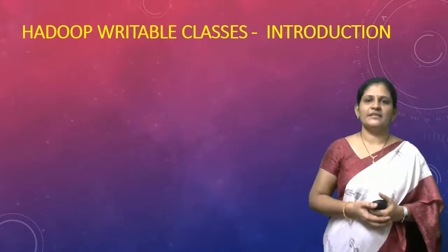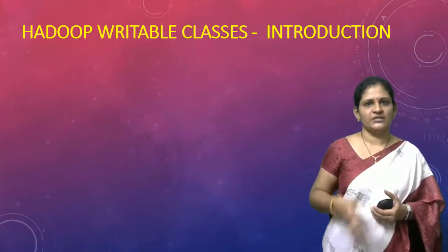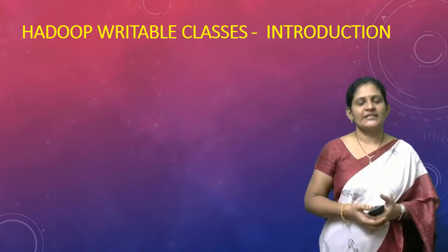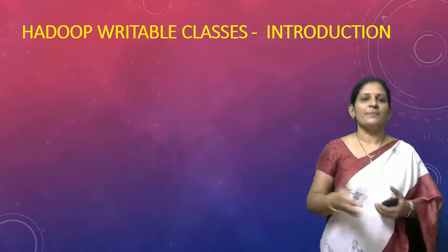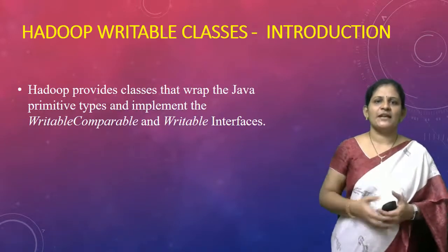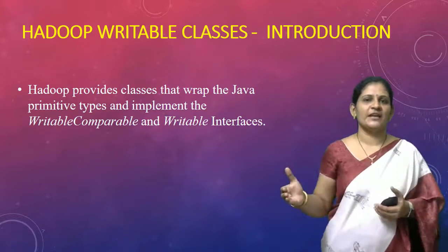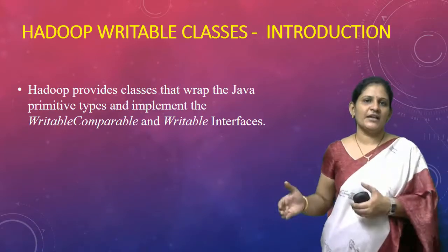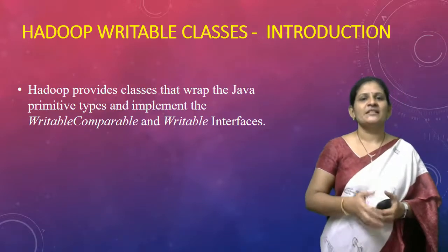Similarly, in Hadoop we don't have wrapper classes like Integer, Float, Double, and so on. Instead, Hadoop has its own wrapper classes called writable classes. For each primitive type there is a corresponding writable class available in Hadoop. For example, for int the corresponding writable class is IntWritable, and for float the corresponding writable class is FloatWritable.